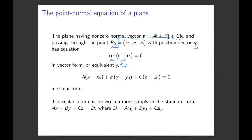Equivalently, we can write down this equation in scalar form. We do the dot product and expand all terms: since n equals (A, B, C) and R minus R0 equals (x minus x0, y minus y0, z minus z0), doing the dot product gives us the scalar equation. With a little modification, the standard scalar form is Ax plus By plus Cz equals D, where D equals Ax0 plus By0 plus Cz0. These two equations are equivalent.